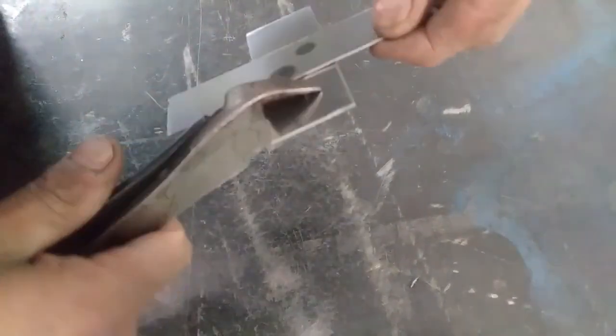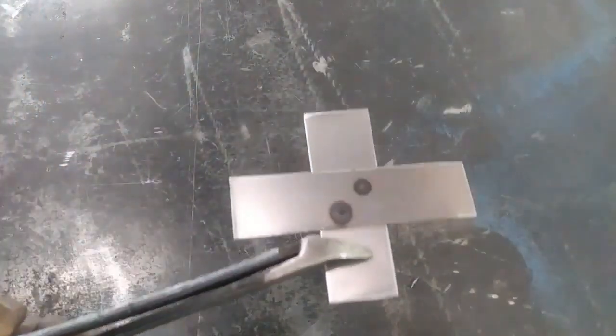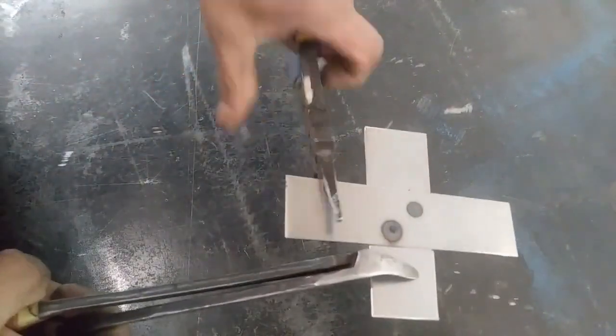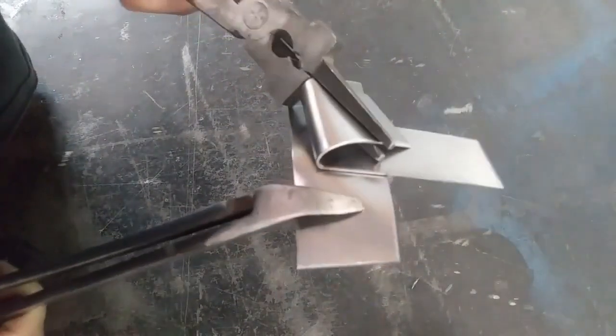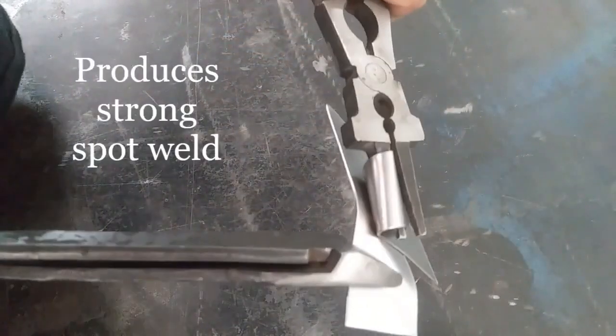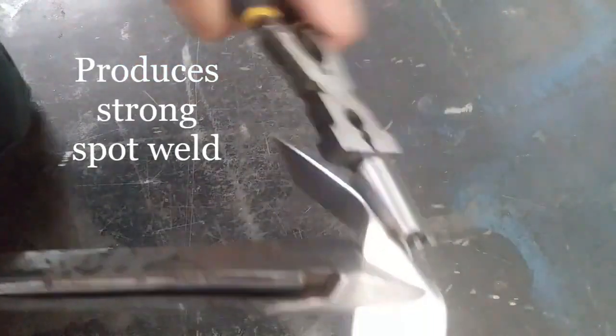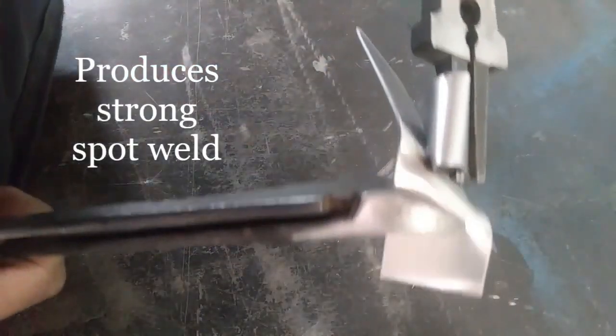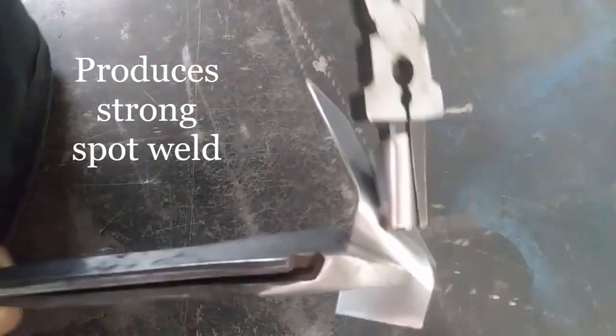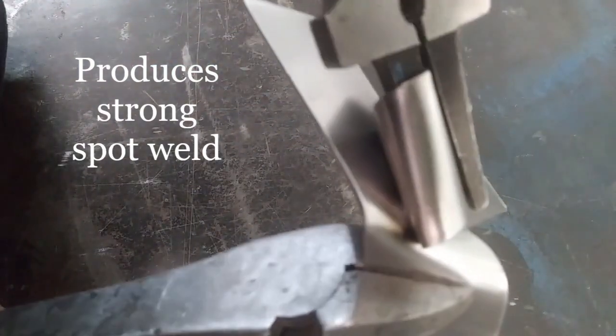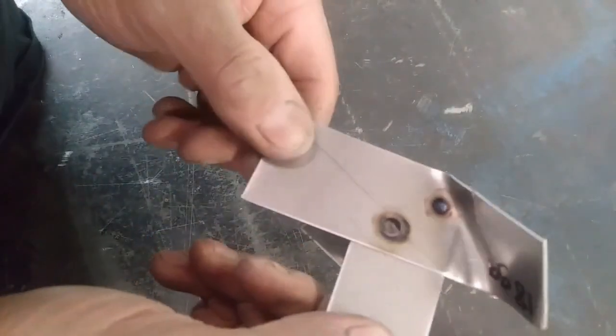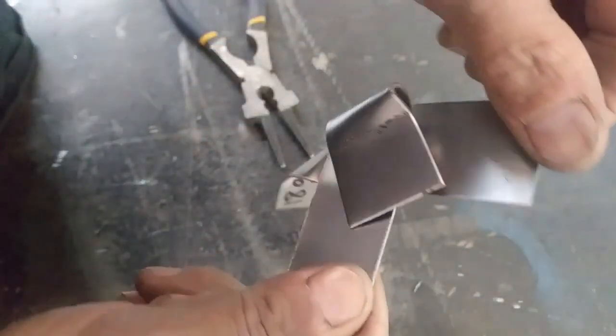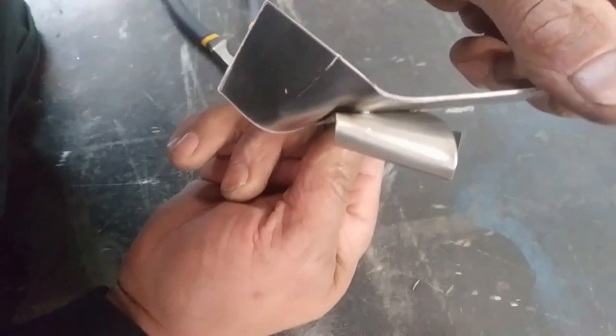Now we're going to do a little destructive test to show you how strong this method is. Now there's no one method or one welding method for everything across the board. This is something else to put in your toolbox for the situation. Yeah, that is a very strong weld nugget. It's as good as any spot welder, resistance welder. There it is, try it.